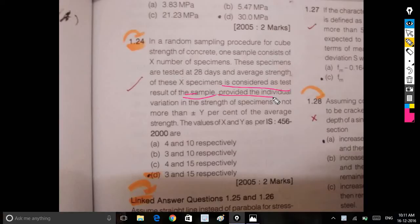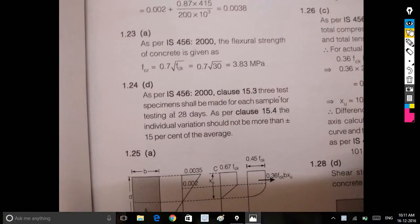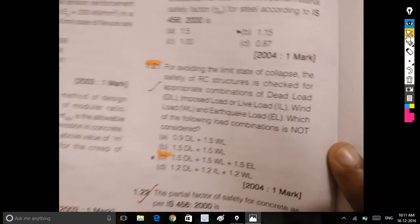Provided the individual test range is not more than 5% variation. Three test specimens shall be made for each sample for testing at 28 days. The individual variation should not be plus or minus 15% of the average.